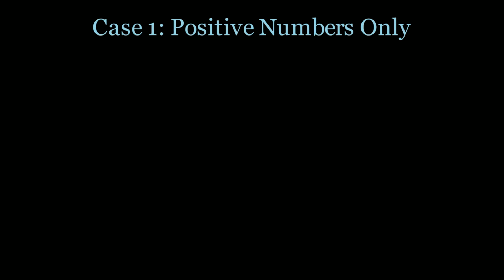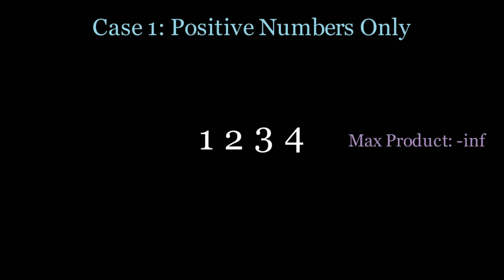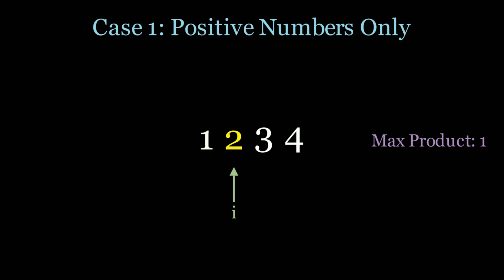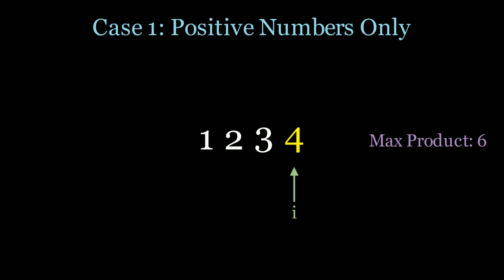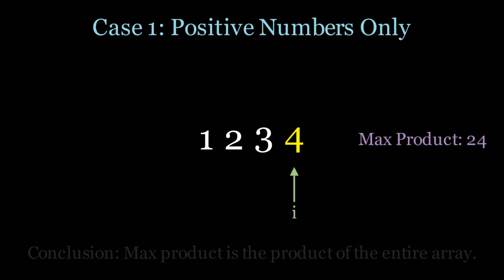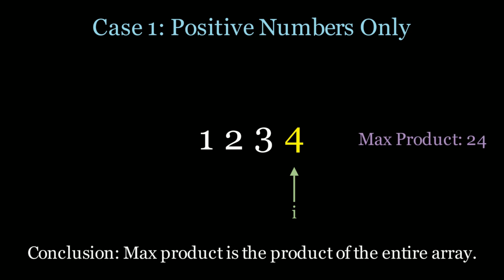Let's go through a conceptual overview looking at three different cases that'll make this problem easier to understand. Case 1 is when we have an array that only has positive numbers. In this case the maximum product of the array is the entire array. If you're trying to find the maximum product and you only have positive numbers, you should include all those positive numbers. So the max product will be 1 times 2 times 3 times 4, which is 24. The lesson here is: if you're dealing with positive numbers, always include them in your maximum product.